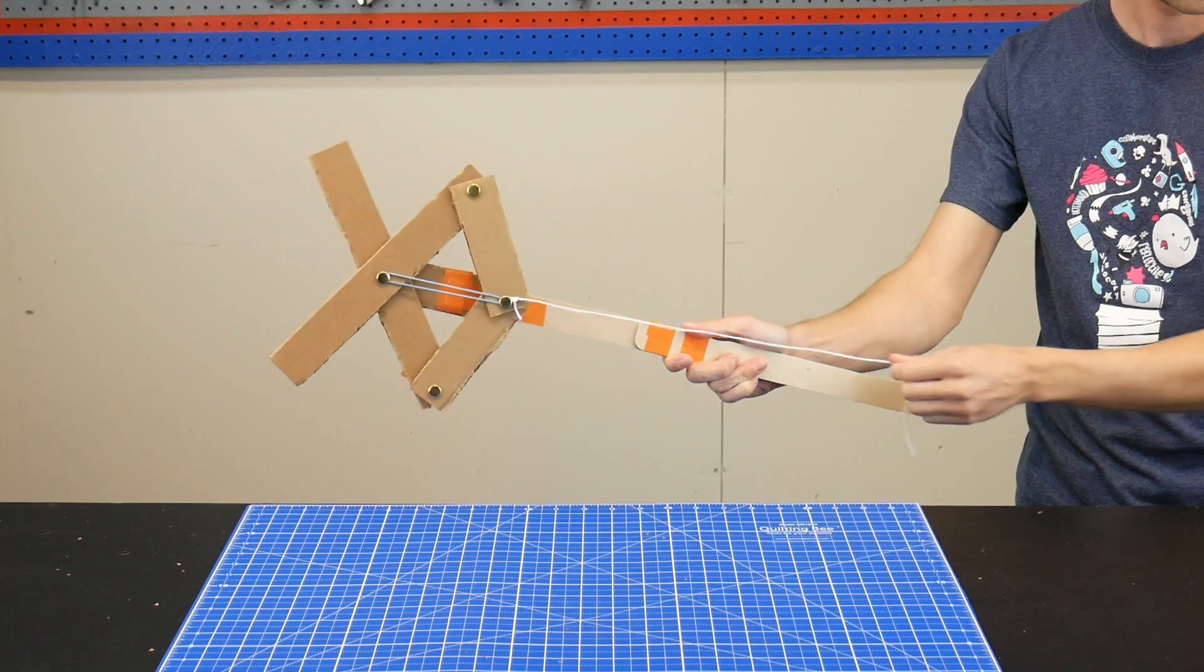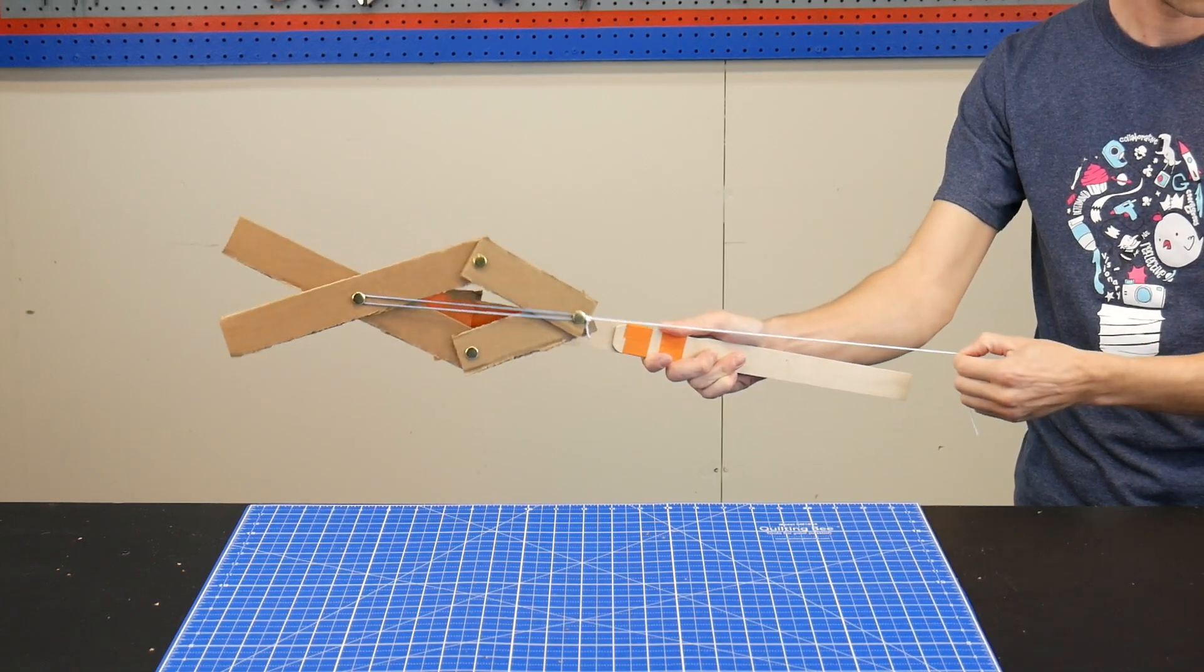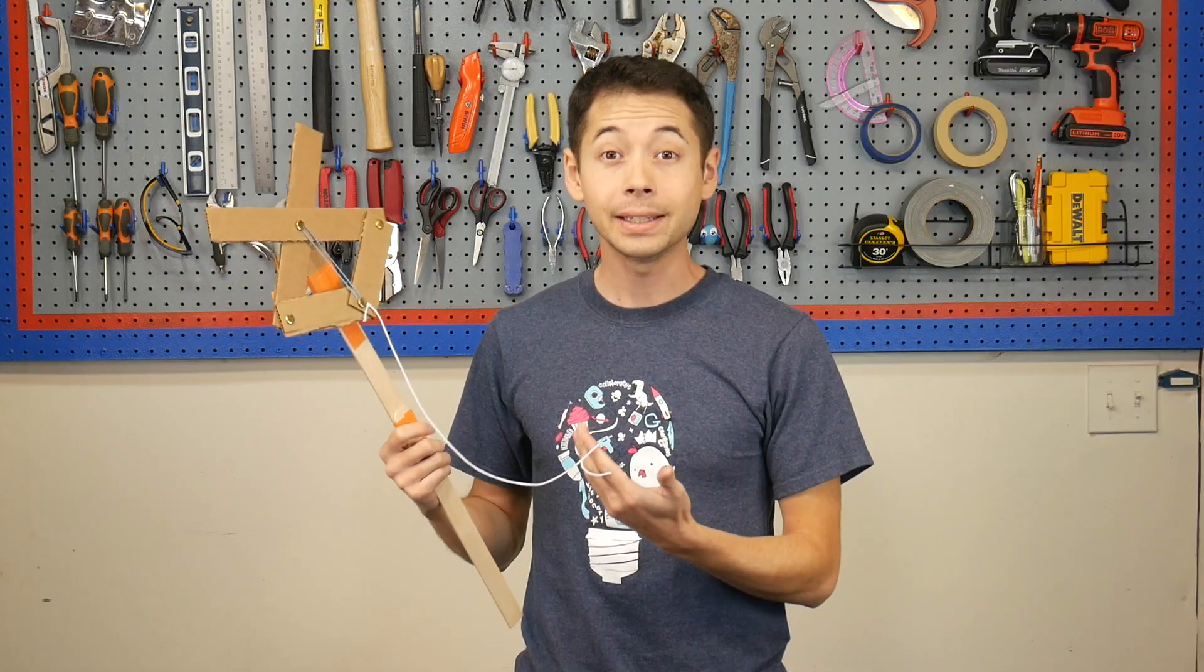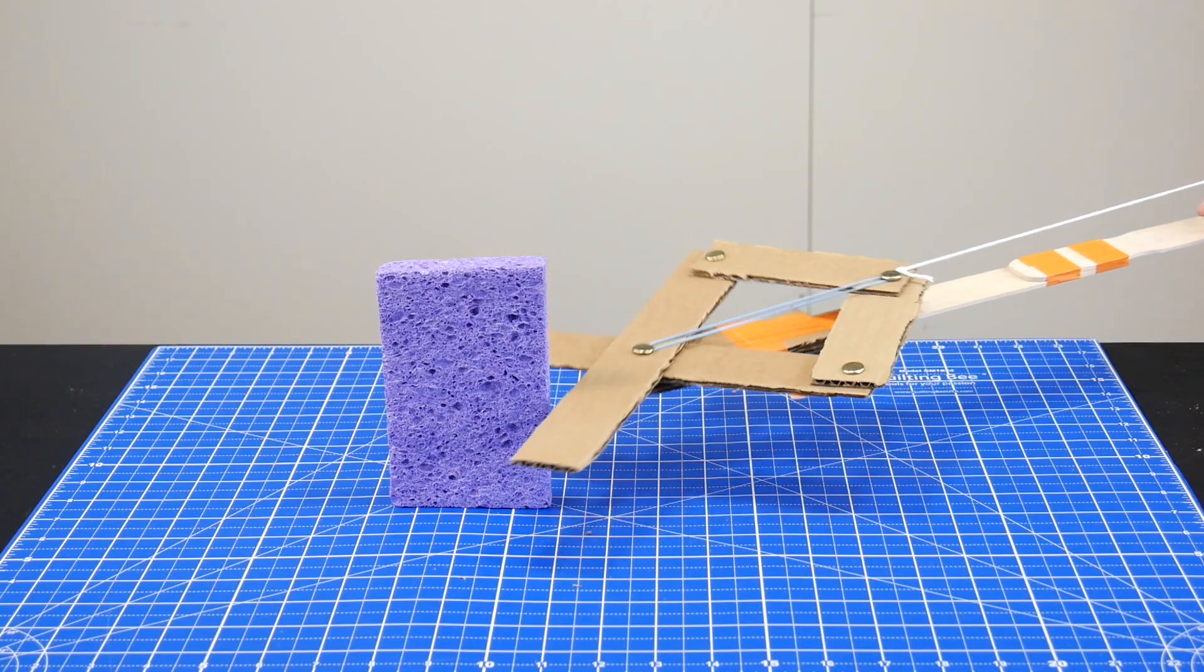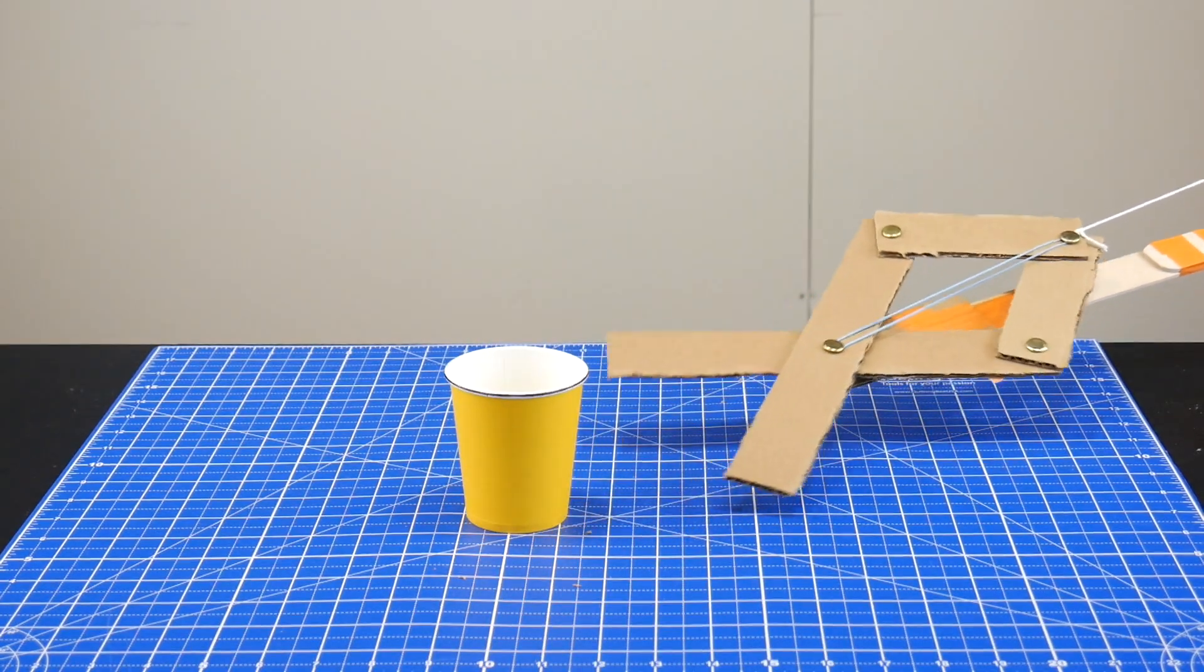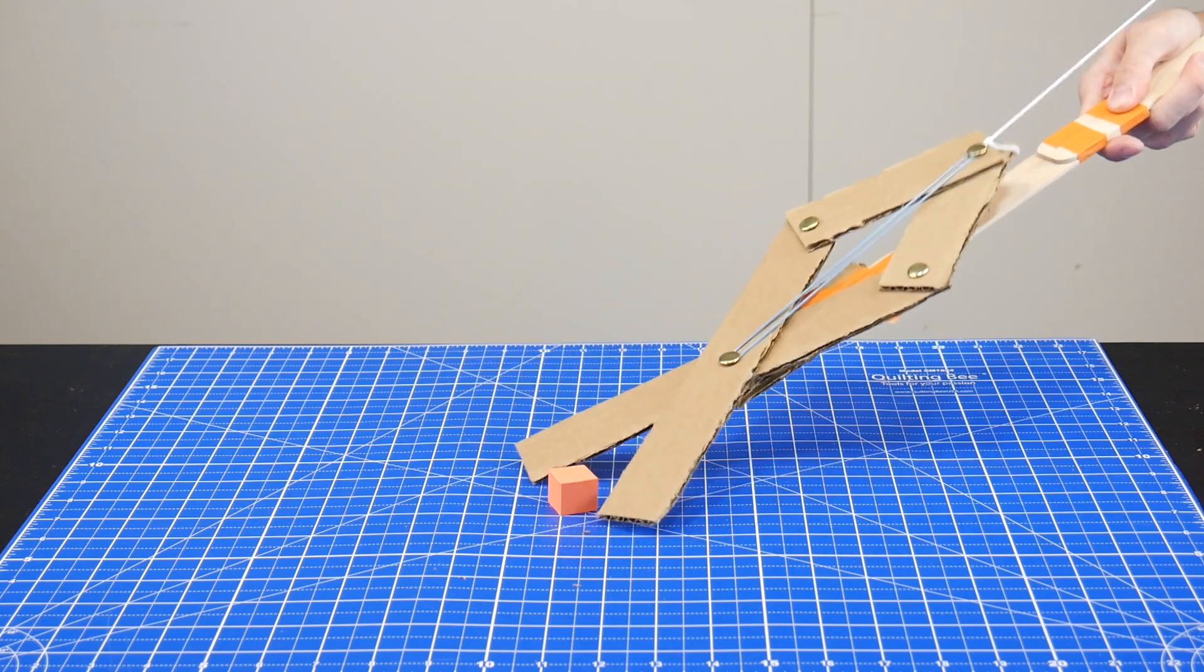Okay, try it out! The grabber should work something like this. So the grabber is kind of working. It can pick up some things, but remember, the challenge is to easily pick up 3 to 5 different objects.